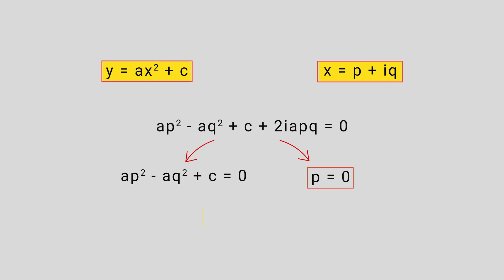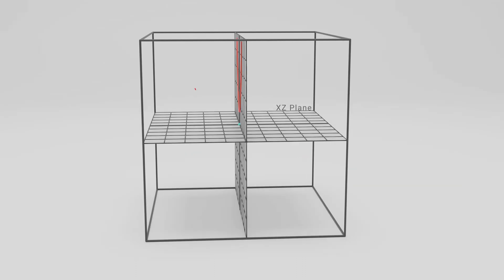From this equation, we get y = -aq² + c. When we plot this graph, we can see that this equation intersects the x-z plane. So these are the two complex roots for this equation.